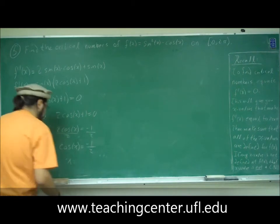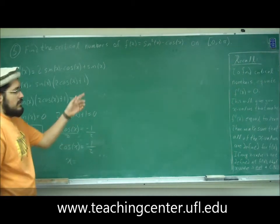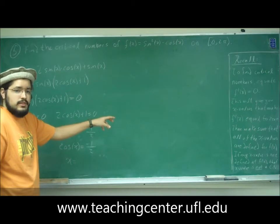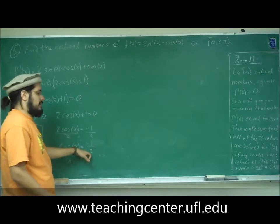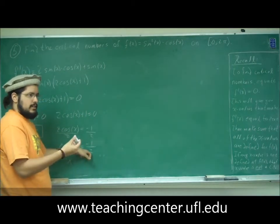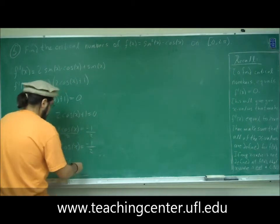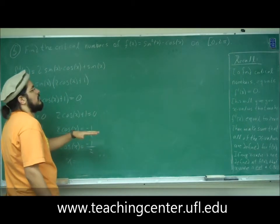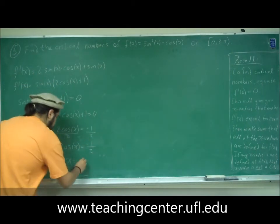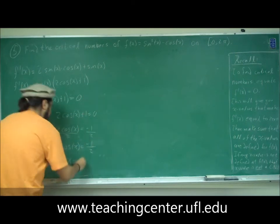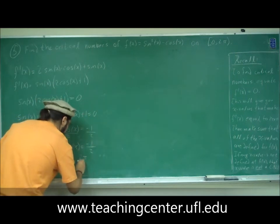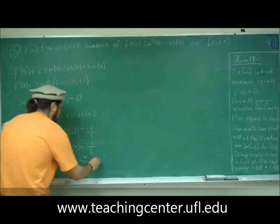Well, definitely cosine is negative in the second and third quadrants. When is it one-half? That's at pi over six. So then we have, sorry, that's at pi over three. So we have two pi over three, and we have four pi over three.